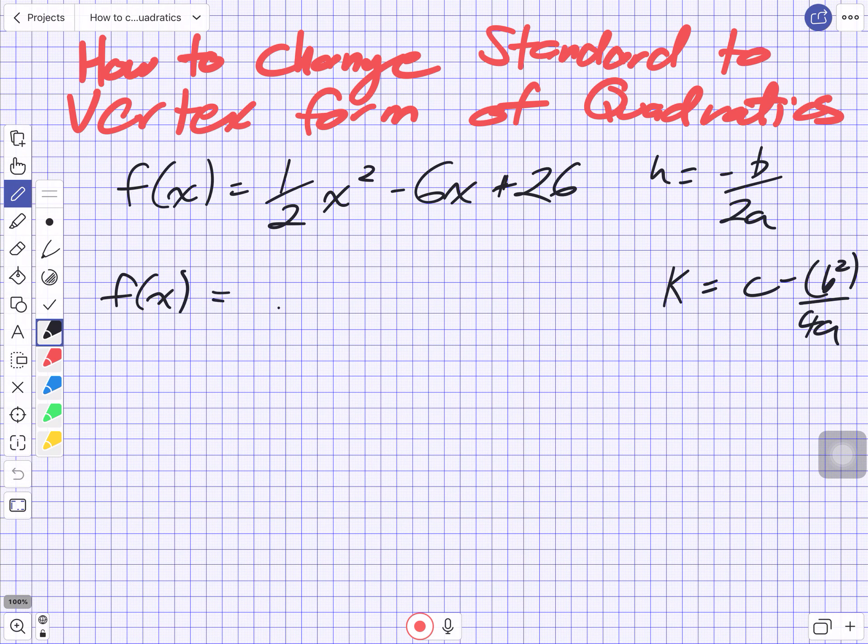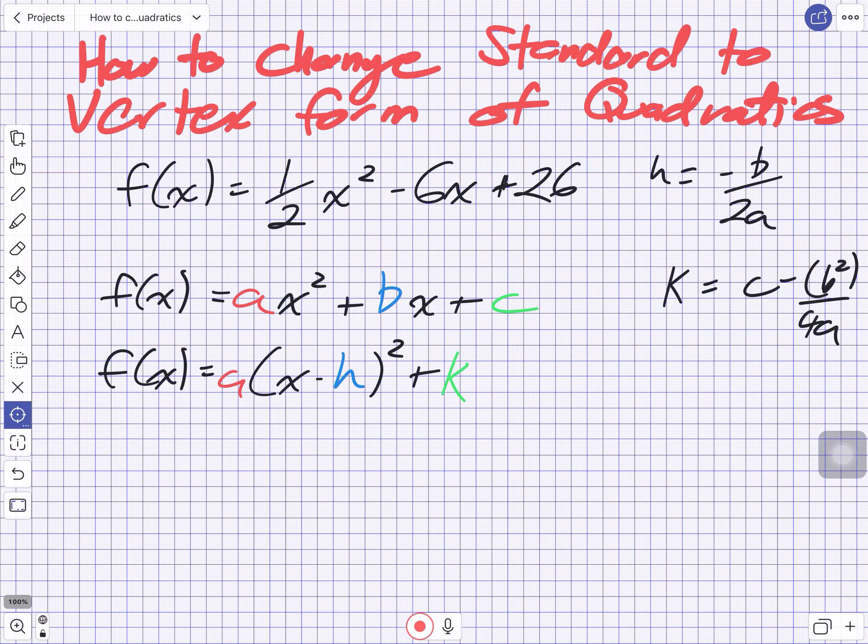Your standard form is written as f(x), which is this function notation, equal to ax² + bx + c. And what the question is asking you is to take that form and change it into a(x - h)² + k. The reason you would do that is it's far easier to graph this, to graph it by hand, than to graph something in standard form. And it also gives us information about what the vertex is.